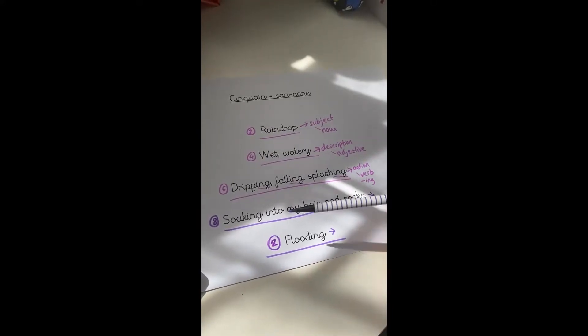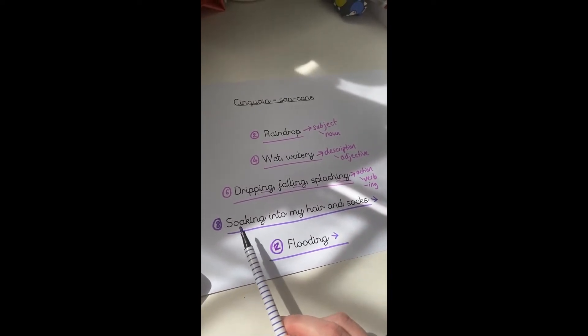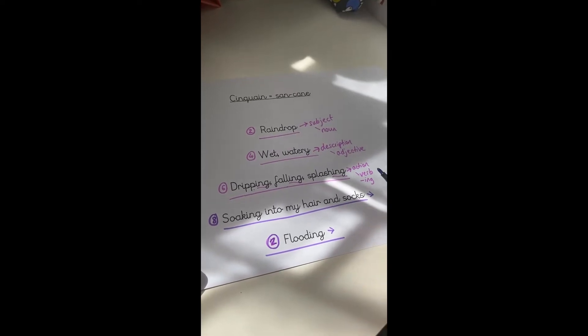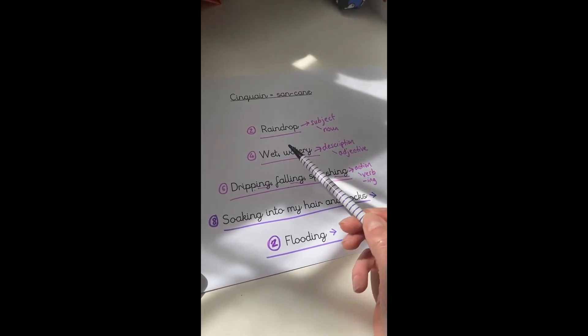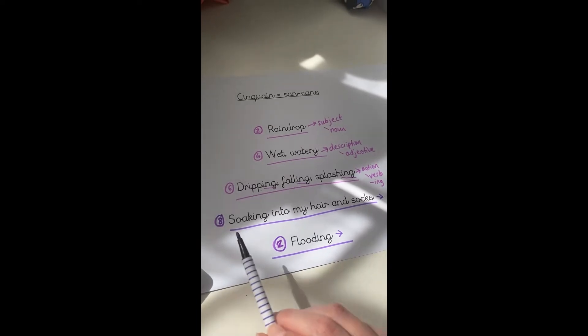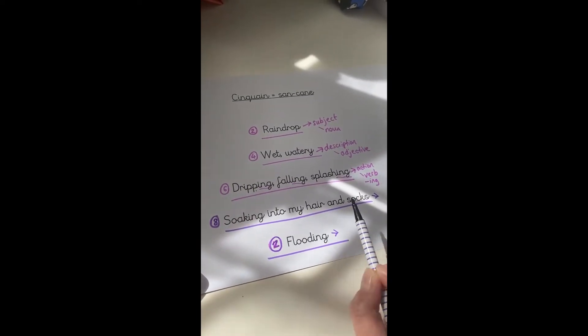And here we are. So we're looking at lines 4 and 5 today. Line 4 here doesn't have a particular word class. Lines 2 and 3 are adjectives and verbs. This one, however, doesn't. Because this line is about feeling.